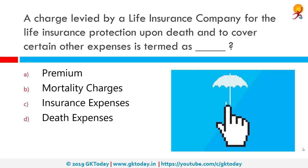A charge levied by a life insurance company for life insurance protection upon death and to cover certain other expenses is termed as what? It is termed as mortality charges. When we buy a life insurance policy, the insurer levies a charge for insurance protection upon death and to cover other aspects. This is known as the mortality charge — the actual cost of insurance by the life insurance company.